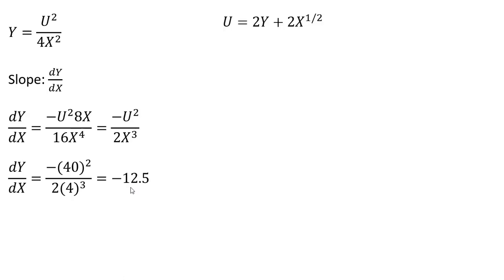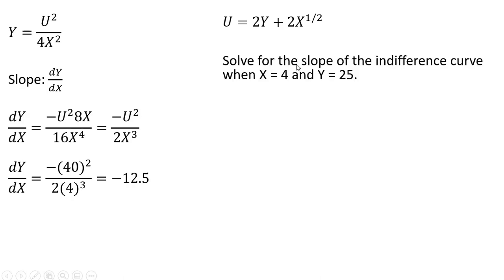Let's do another example. Here's a different utility function. This is going to be a quasi-linear utility function. We want to solve for the slope of the indifference curve when x equals 4 and y equals 25.